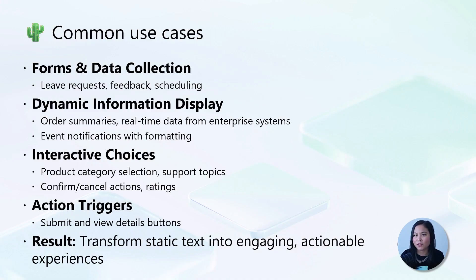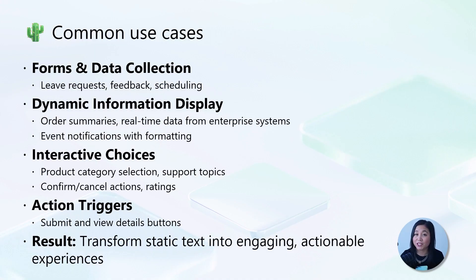Adaptive cards are commonly used for forms and data collection — examples include leave requests and appointment scheduling. For dynamic information, you can display summaries or real-time data from enterprise systems like ServiceNow or Dynamics 365. You also have interactive choices where a user can select from a list of options. These cards enable static text conversations to include actionable elements such as submit buttons or view detailed links, resulting in interactions that are more structured and functional compared to traditional text-only conversations.